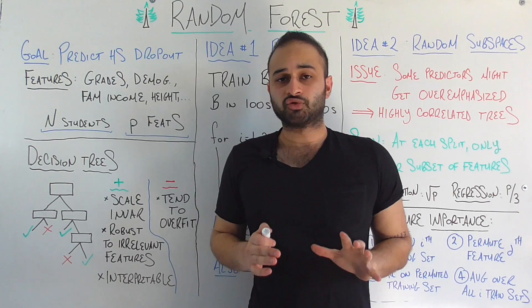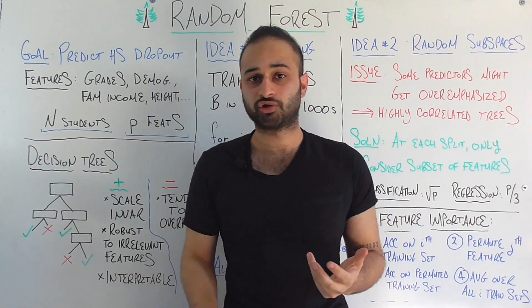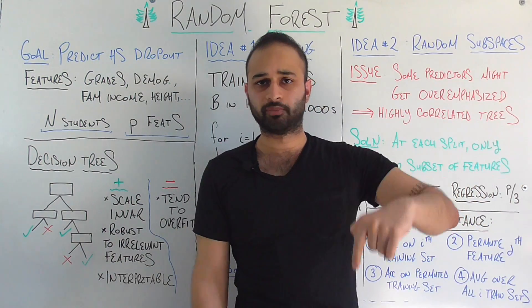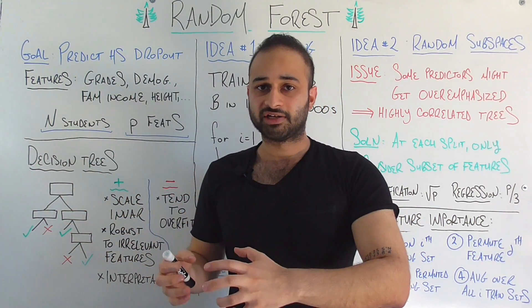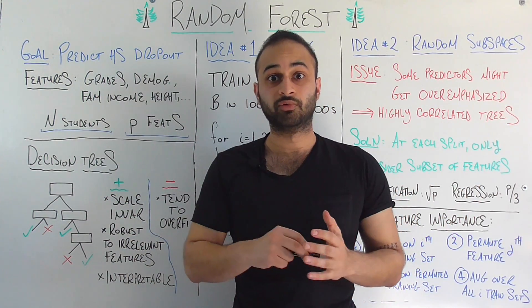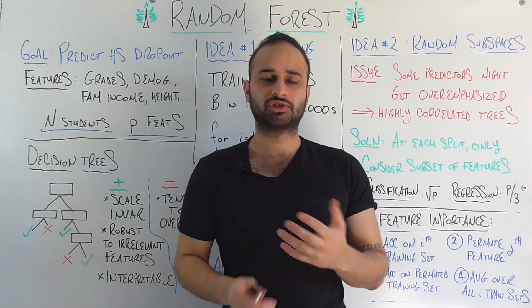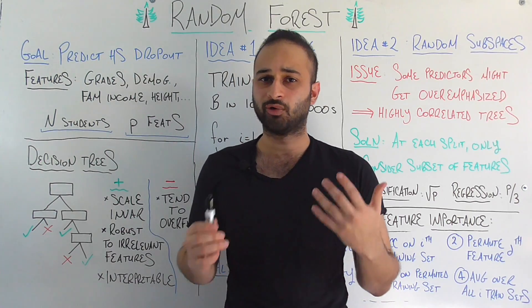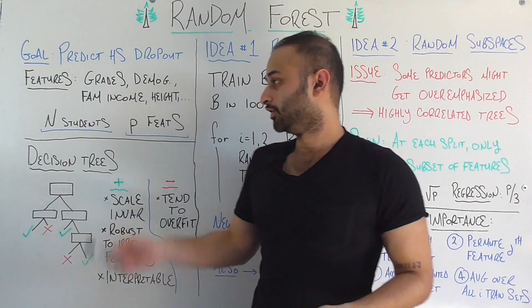Now, as good as decision trees are, there's one big con — and that's why we need random forests. The big con of decision trees is that they tend to overfit. The basic idea of overfitting is that the decision tree takes the training data and learns it too well. That typically happens when the decision tree gets way too deep. It's going to do really well on your training set of N students, but when you try to use it on students outside of the sample — maybe from other high schools — it's not going to generalize.